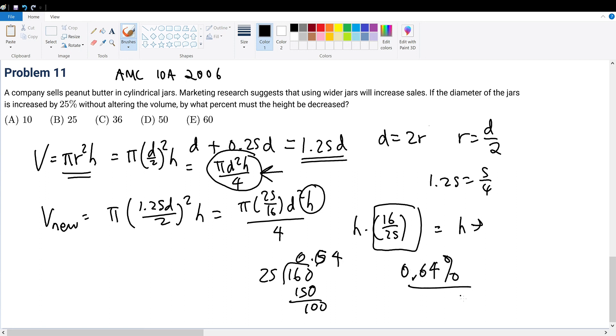But wait—we want the height to be 64% of the original, meaning we keep 64% and remove 36%. So we're decreasing it by 36%, not 64%. The answer is 36, choice C.